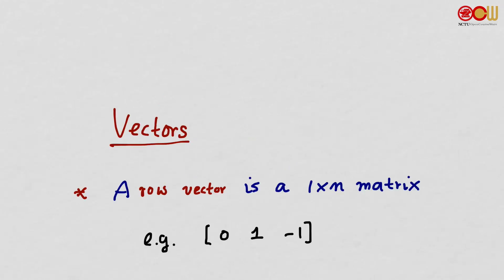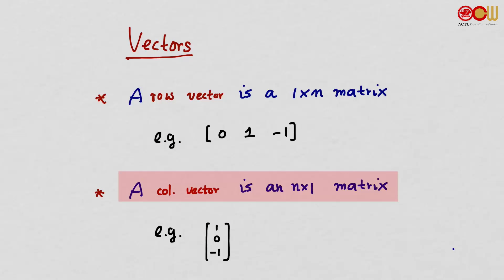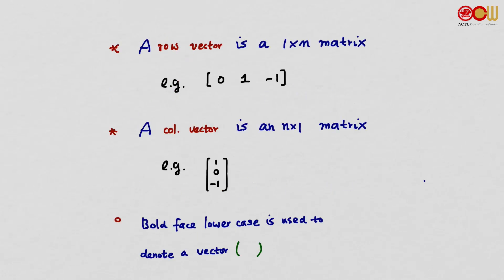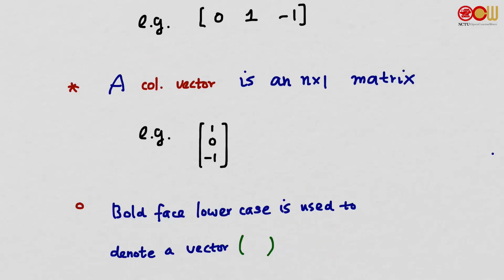Now let's talk about vectors. A row vector is a special kind of matrix — it's a 1 by n matrix. For example, this is a row vector. A column vector is an n by 1 matrix — this is an example of a column vector. In the book, boldface lowercase letters are used to denote a vector, so the notation is boldface — thick, like so.